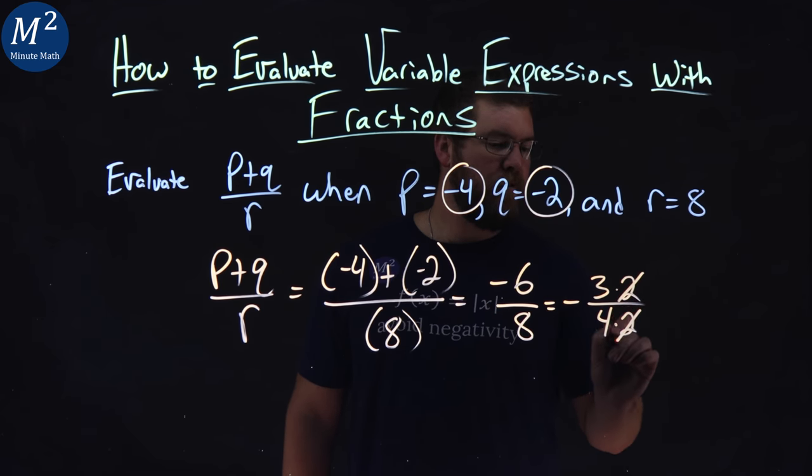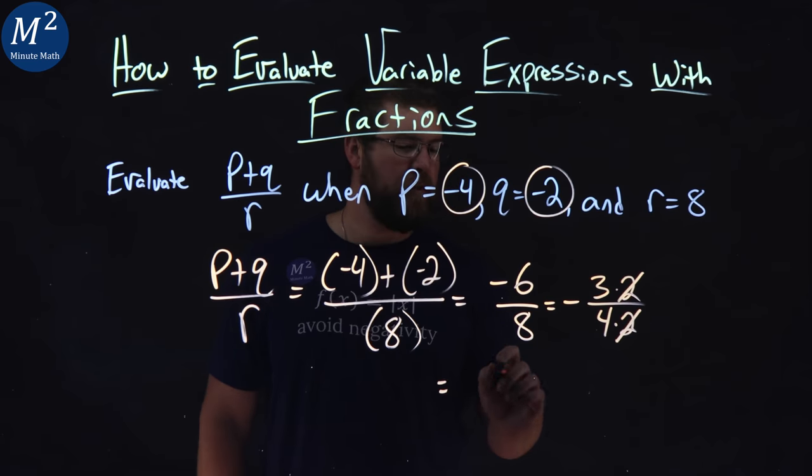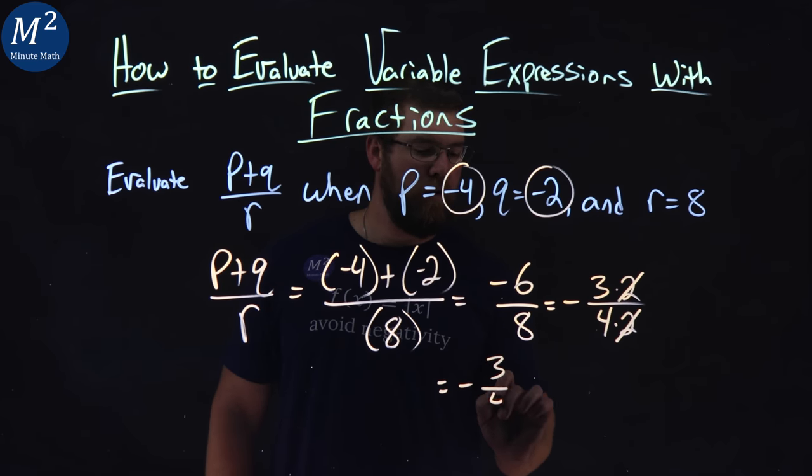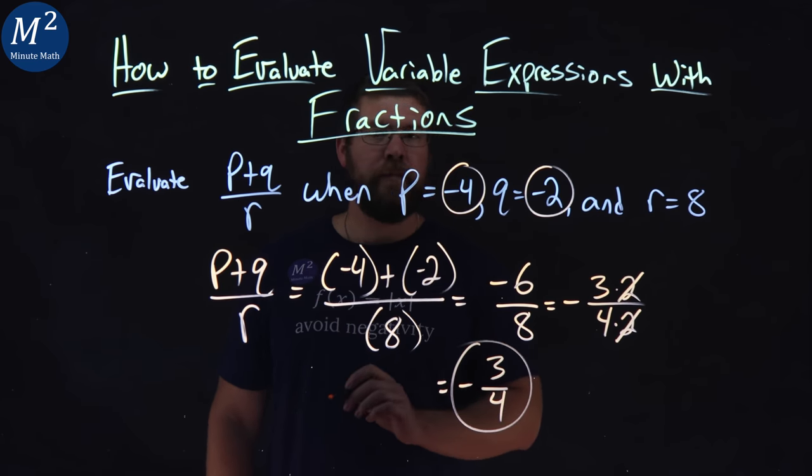So we can cross off those 2's here, and we're left with negative 3 over 4, and that's it.